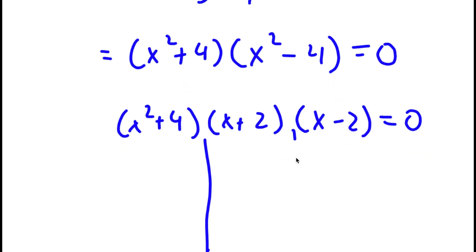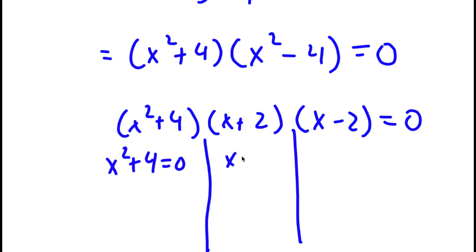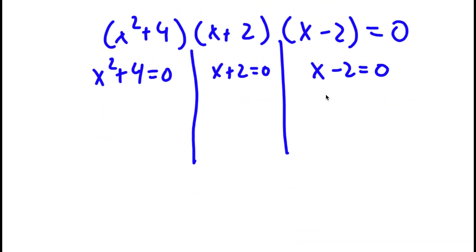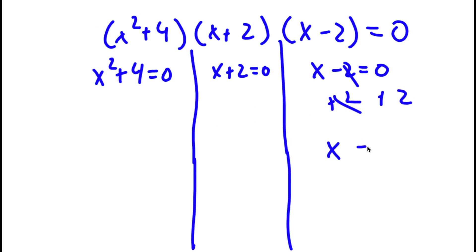This gives me three equations: x to the power of 2 plus 4 is equal to 0, x plus 2 is equal to 0, and x minus 2 is equal to 0. For x minus 2 equals 0, I add 2 on both sides, and I'm left with x is equal to 2. This is one solution.